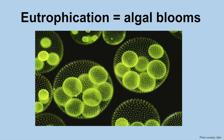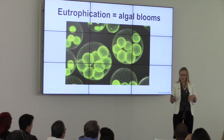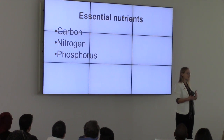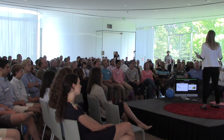So algal blooms, eutrophication — there's a problem that we have here in Toledo with that. The picture you're looking at is what algae looks like at the microscopic level, looking through a microscope. They're really tiny, but they can have the potential to cause a huge issue. So how exactly does algae form?